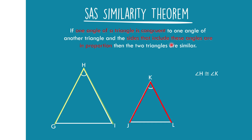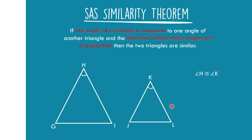These sides should be in proportion, so we create a ratio of the corresponding sides of the two triangles, where KJ corresponds to HG and KL corresponds to HI. Our proportion will be KJ over HG is equal to KL over HI. Therefore, we can conclude that triangle GHI is similar to triangle JKL.